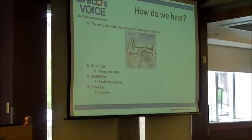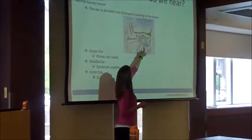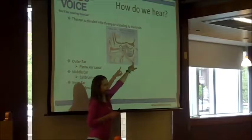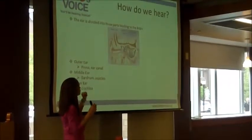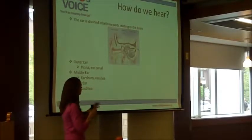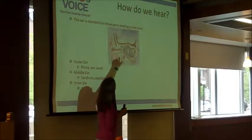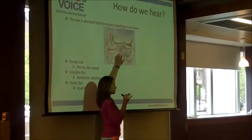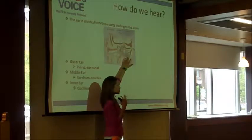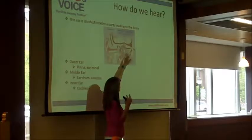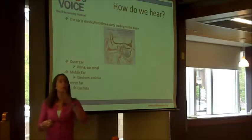I actually have a little demo of these — just pass that around if you'd like to see. Then we have the inner ear, which consists of the cochlea, which looks like a snail. It's a bony structure and inside the cochlea there are hair cells and fluid. When sound goes into your ear, it comes in through the pinna, goes through the ear canal and into the eardrum, starts vibrating, and when it goes into the cochlea, the fluid starts to move, the hair cells vibrate, and it goes off into the brain. That is how we hear.